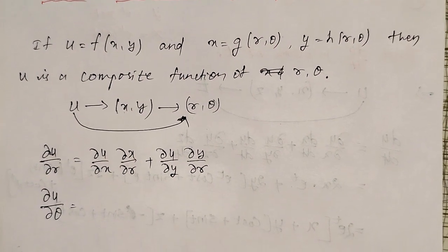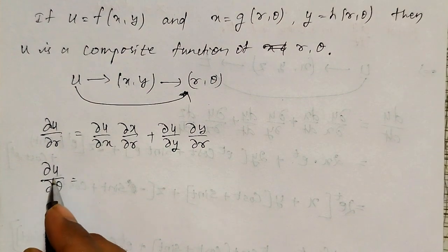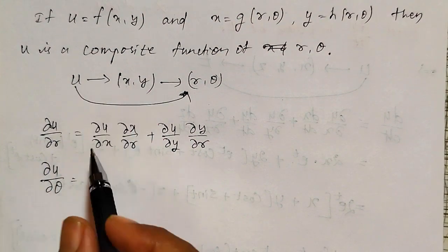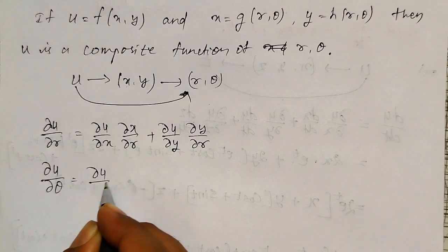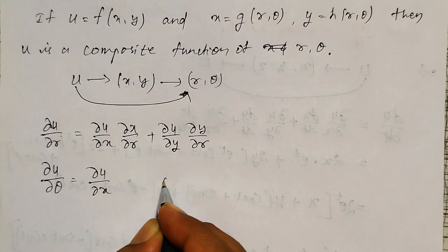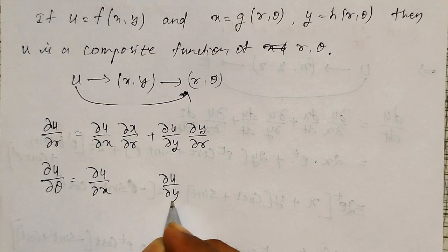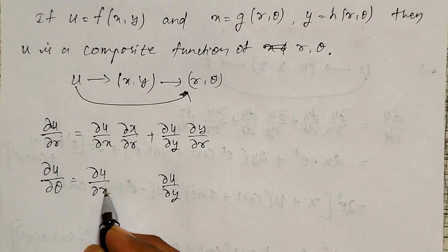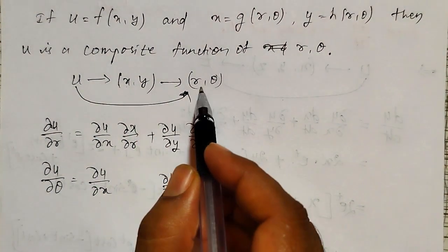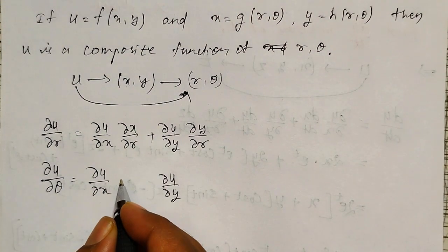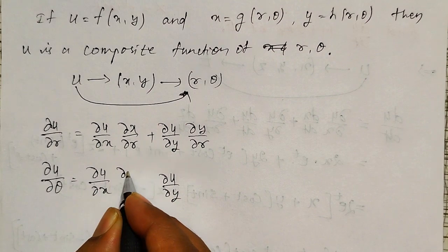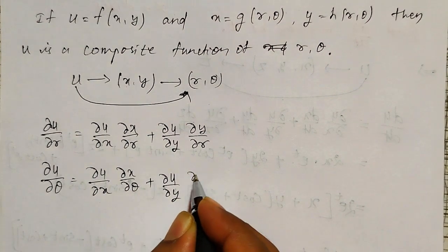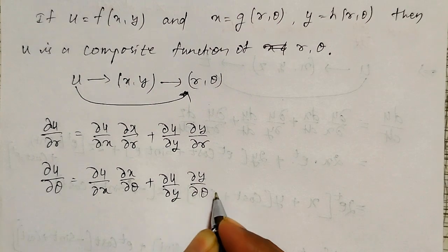Similarly, while finding the partial derivative of u with respect to θ: again u is a function of x and y, therefore ∂u/∂x and ∂u/∂y exist first. Since I want the derivative with respect to θ, and x is also a function of r and θ, there exists ∂x/∂θ. Therefore: ∂u/∂θ = (∂u/∂x)(∂x/∂θ) + (∂u/∂y)(∂y/∂θ).